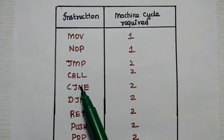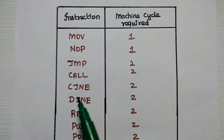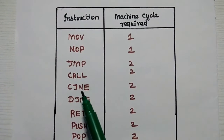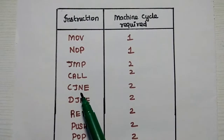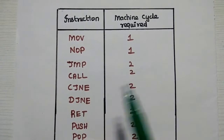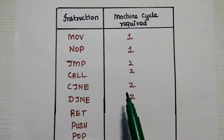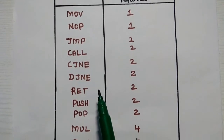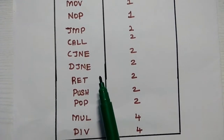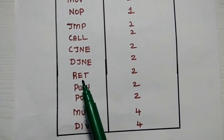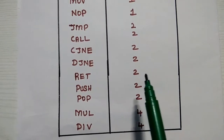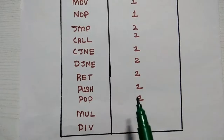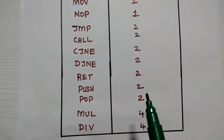Jump, CALL, and CJNE (compare and jump if not equal) each require two machine cycles to complete their operation. DJNZ also requires two machine cycles. The RET (return) operation also requires two machine cycles. PUSH and POP each require two machine cycles as well.